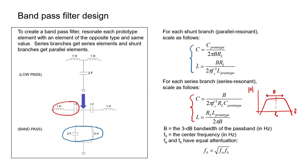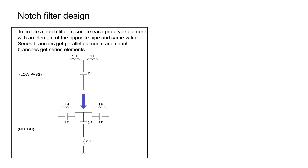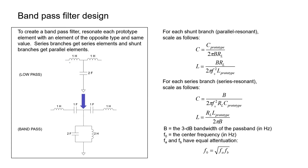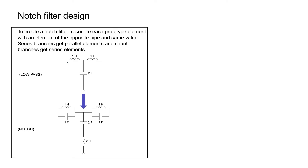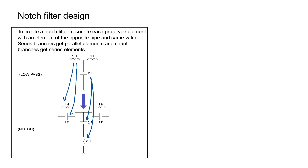A notch filter has a very similar design procedure to a bandpass filter. The only difference is that the partner element is arranged in a slightly different configuration. For the bandpass filter, every series element remained in series and every shunt element remained in shunt. For a notch filter, every time you add a series element, you add it in parallel; and every time you add a shunt element, you add it in series rather than in parallel. Again, every partner element has the same prototype value as before the conversion. So a 1 Henry inductor remains 1 Henry, and its partner capacitor also has a value of 1. The 2-Farad capacitor remains 2 Farads, and the partner inductor has a value of 2 Henrys.